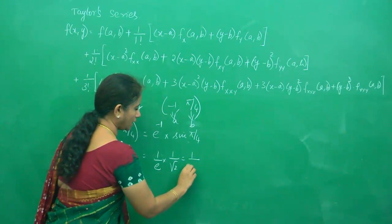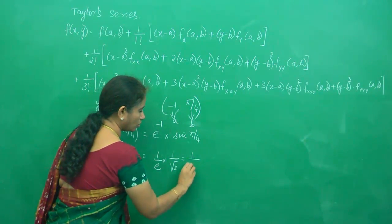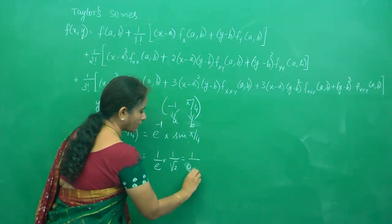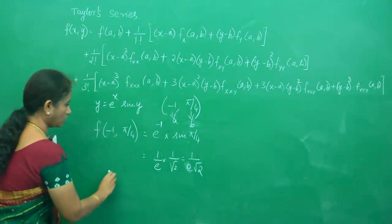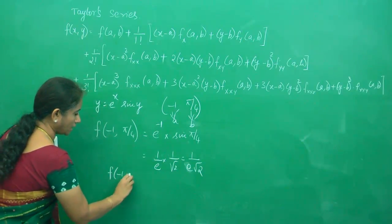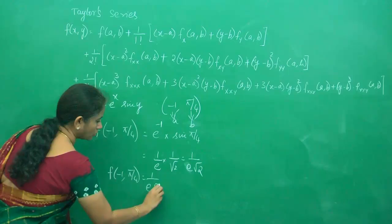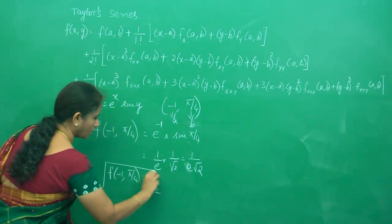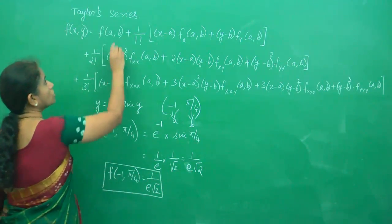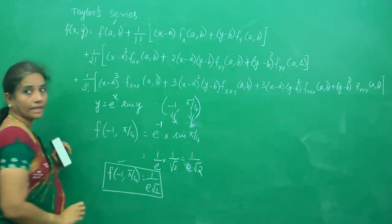So you can write it neatly as 1/(e√2). You need to write it organized. Keep it ready. So your first part is ready here.